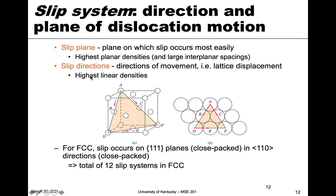Also, in that plane, slip occurs in a specific direction. The slip direction is the direction of movement — this is the lattice displacement, in the same direction as the Burgers vector. We can define slip directions as being the directions that have the highest linear densities.